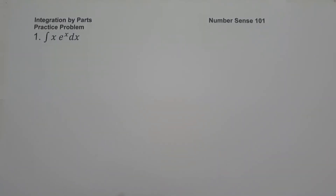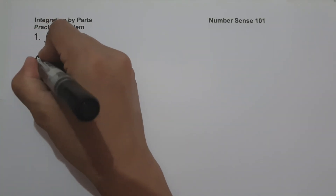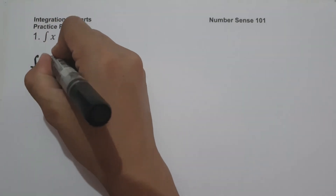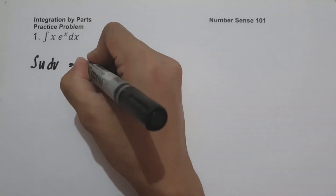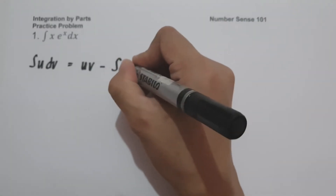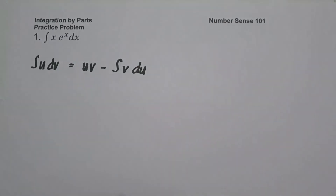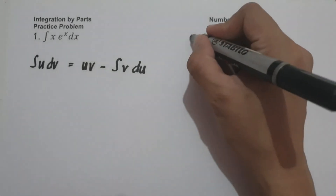On the first example, what is the antiderivative of x e raised to x dx? To simplify this, we are going to use the formula: the antiderivative of u dv equals uv minus the antiderivative of v du. To identify the value of u, let us use the acronym LIATE.